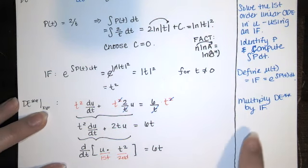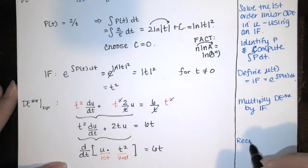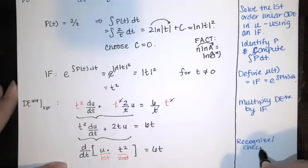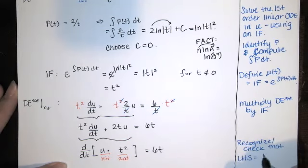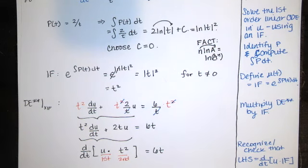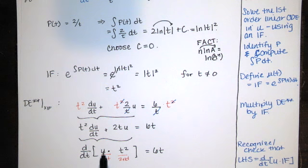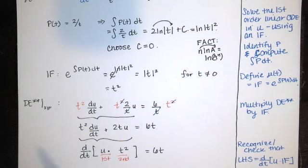This time it checks out. So we multiplied the differential equation by the integrating factor, and we recognized that the left-hand side was equal to the derivative with respect to t of u times the integrating factor. Here it looked impossible to find u — we couldn't separate the variables, there was nothing else we could do. But now we're only two operations away from getting u by itself. This says: take u, multiply it by t squared, take the derivative of that result with respect to t, and you get 6t.